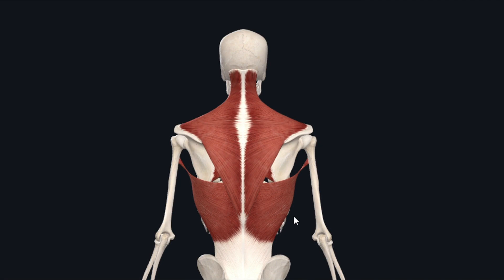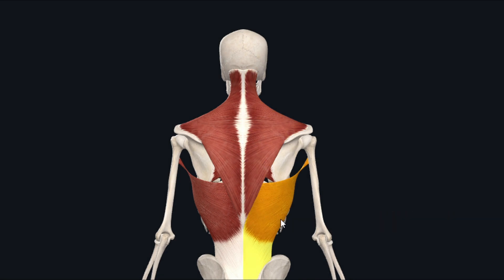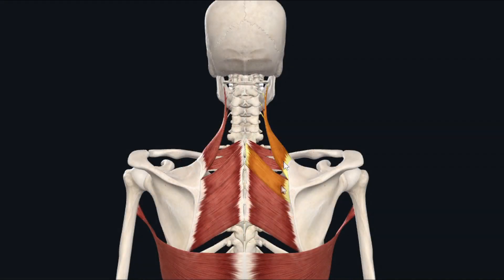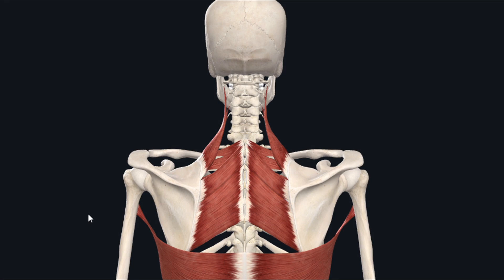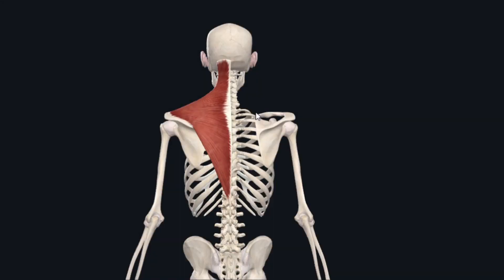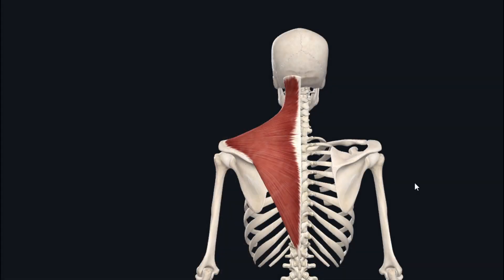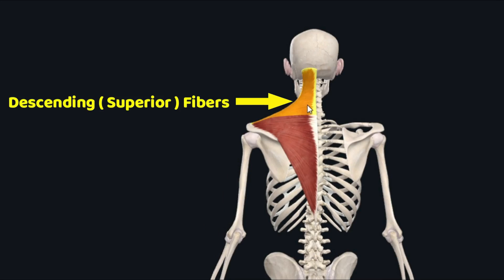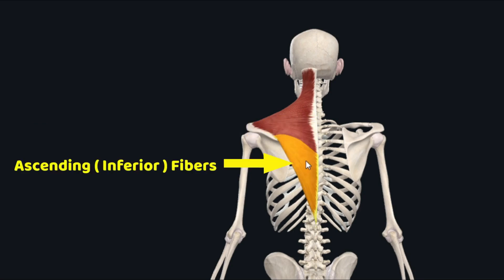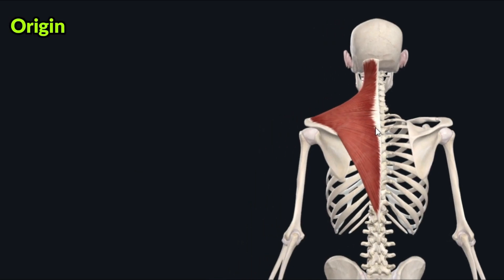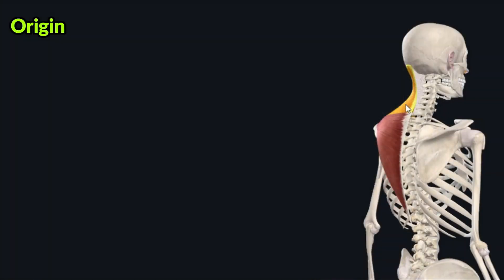There are five muscles which constitute the superficial or extrinsic back region: the trapezius muscle, the latissimus dorsi, the levator scapulae muscle, the rhomboid minor, and the rhomboid major muscle. The trapezius is a flat triangular muscle consisting of three groups of fibers: the descending or superior fibers, the transverse or middle fibers, and the ascending or inferior group of fibers.